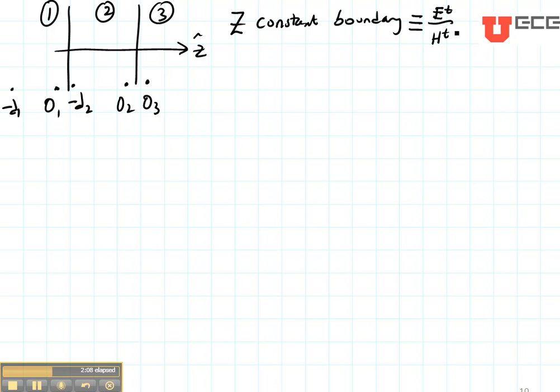If this ratio were not constant across the boundary, there'd have to be some kind of explosion. So we can say that the characteristic impedance given in ohms jumps the boundary. The ohms are equal on either side.